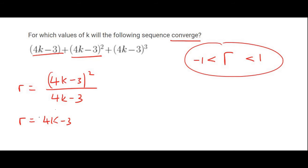What we can then do is take that R value and plug it into there. And so what that would give us is the following: minus 1 is less than 4K minus 3, smaller than 1.